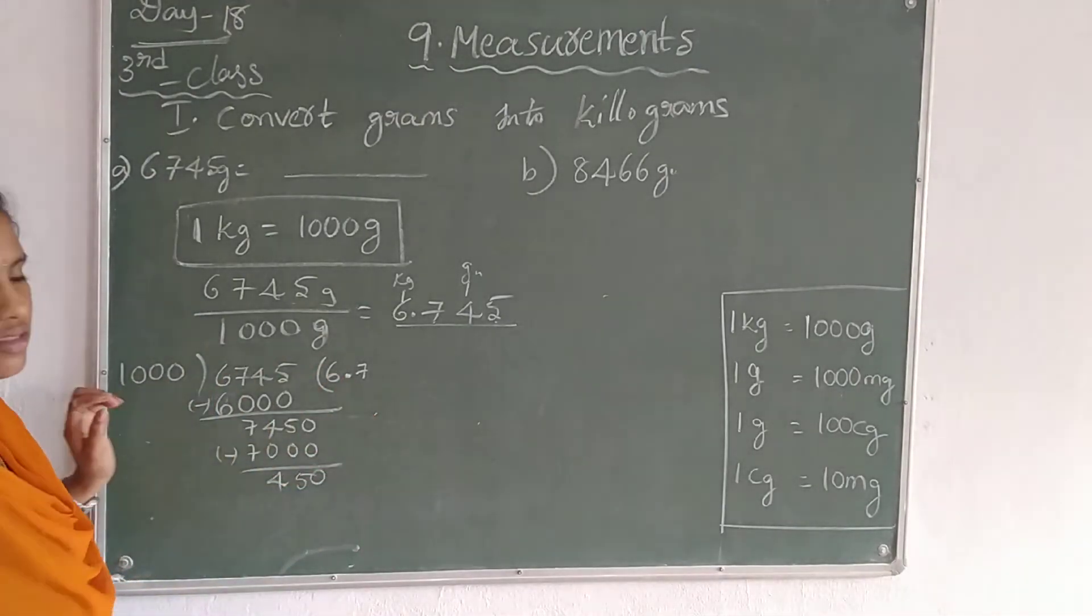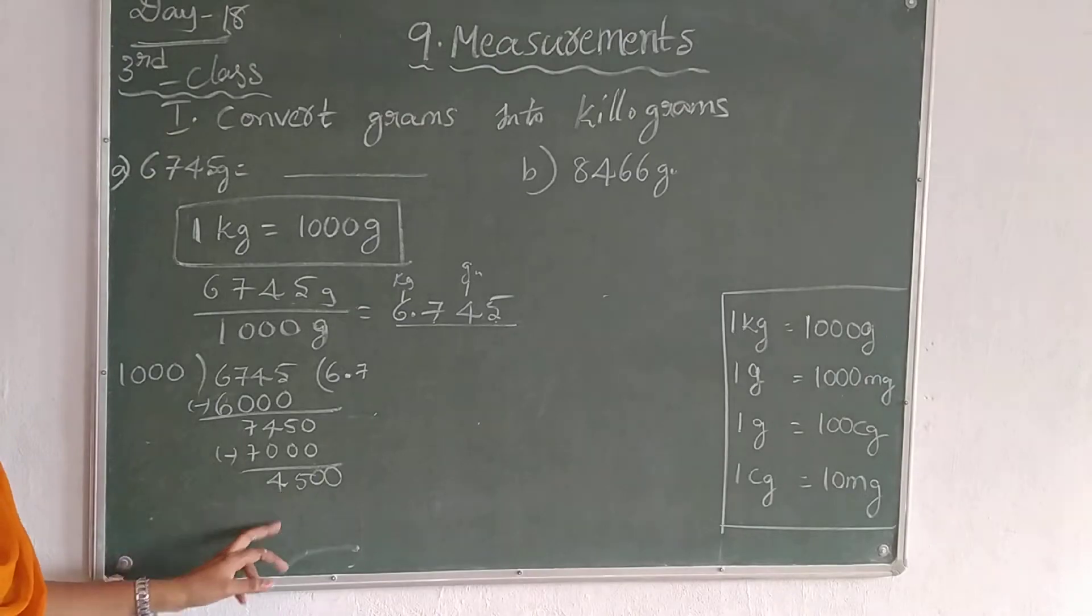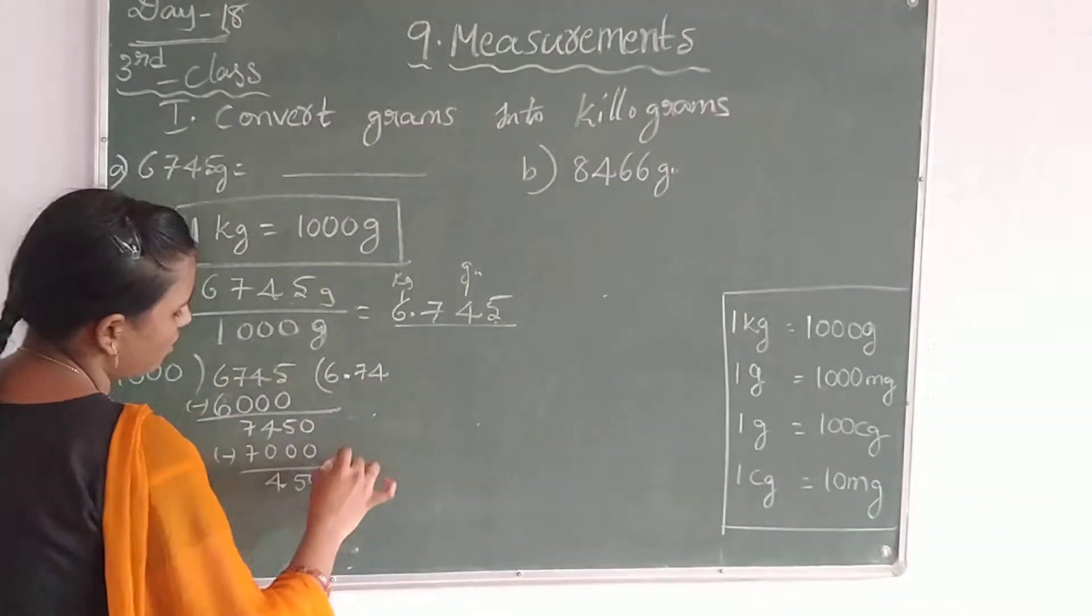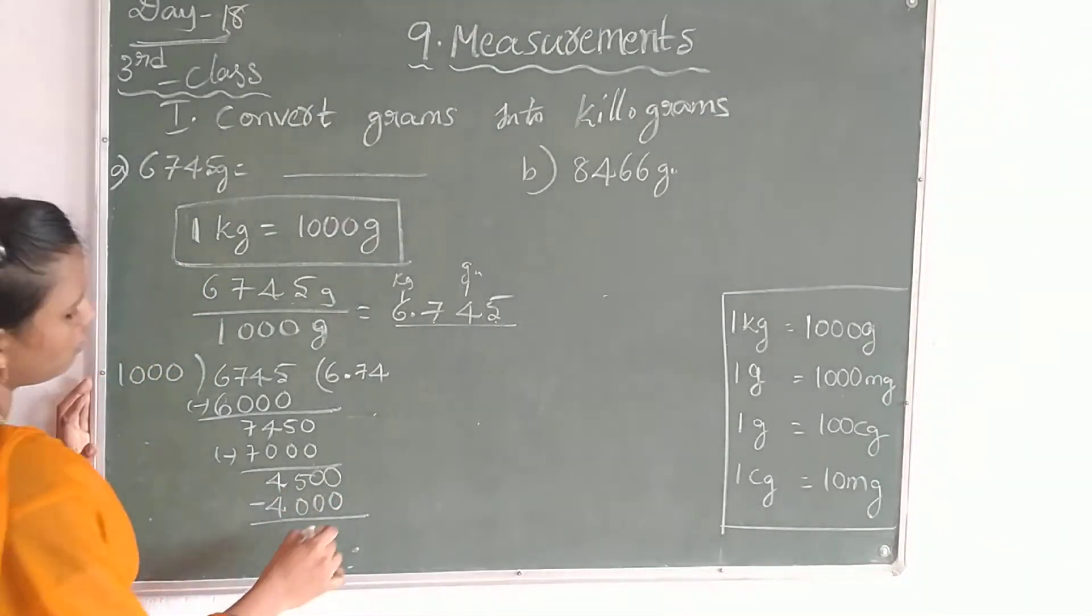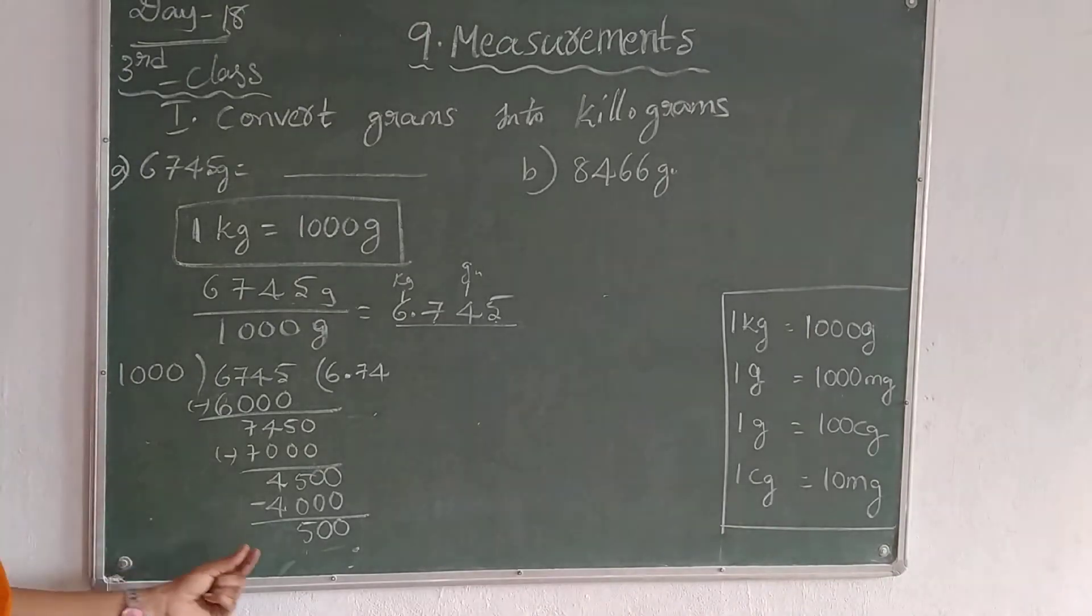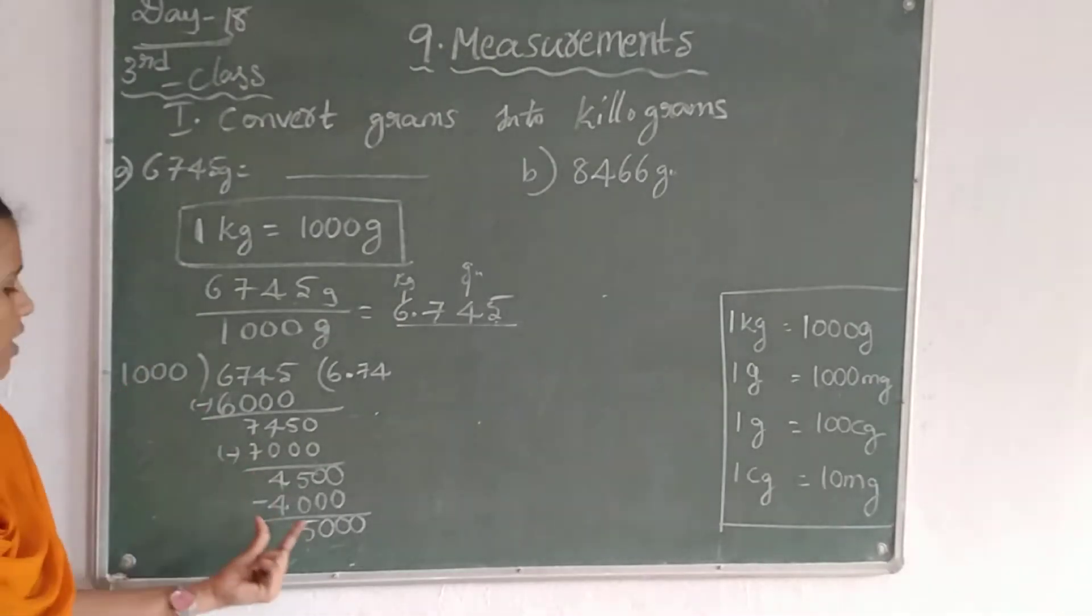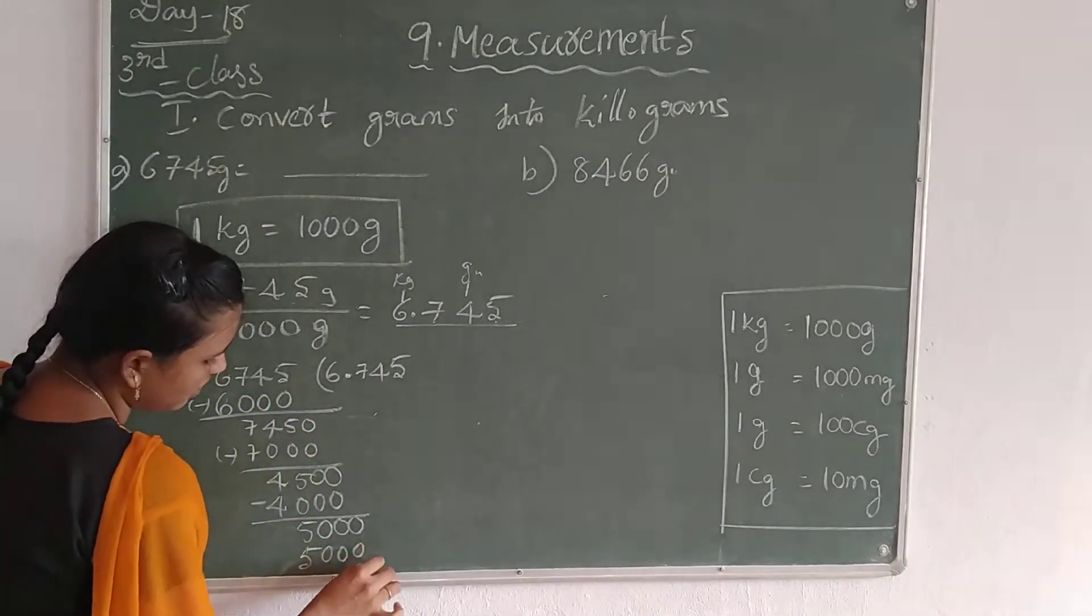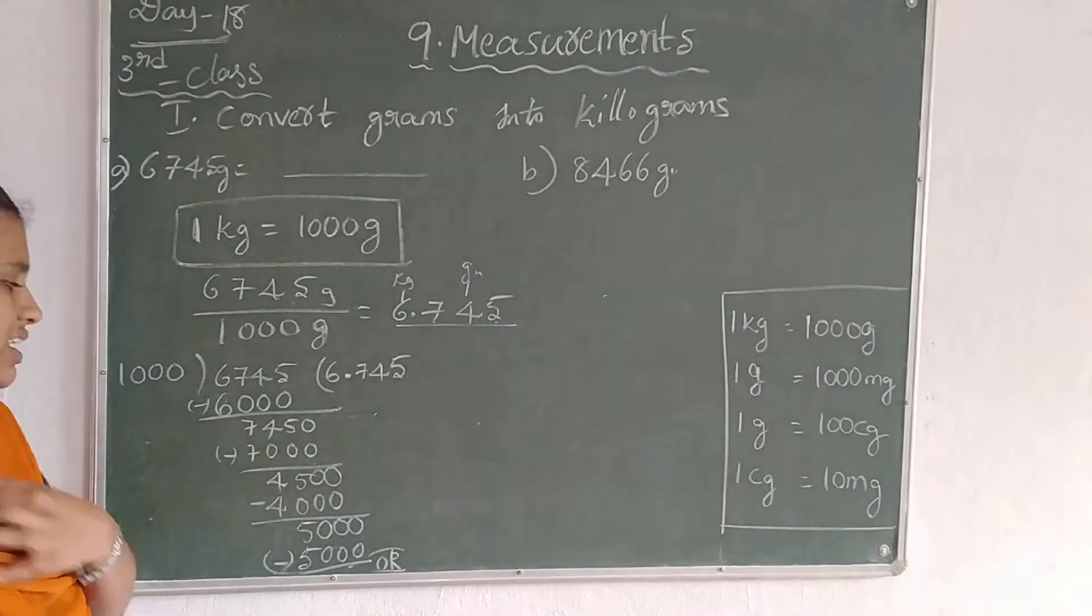We already took one point, so take 0. 1000, how many times into 4500? First digit is 4, so 4 times. Write 4 and 4000. Again subtract that number: 0, 0, 5. 4 and 4 is 0, no need to write. So here we have 500. We already took a point, so put 0. Again, 1000 into 5000 is 5 times. Write 5 and 5000. We will get 0 reminder.